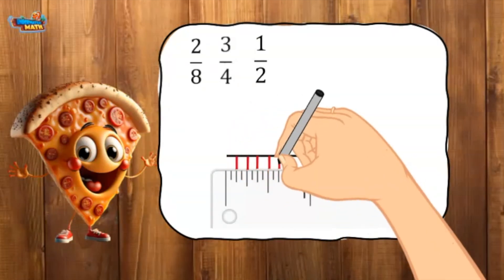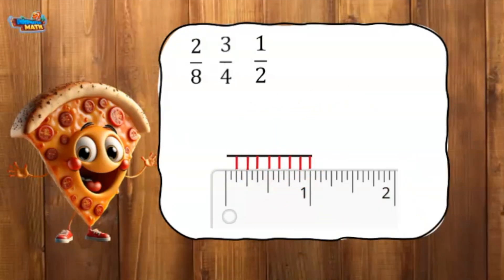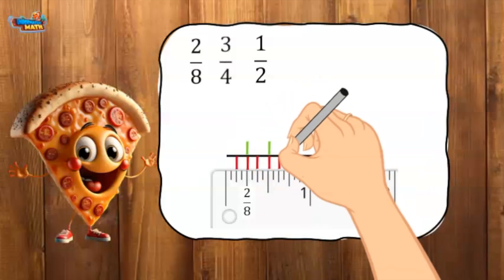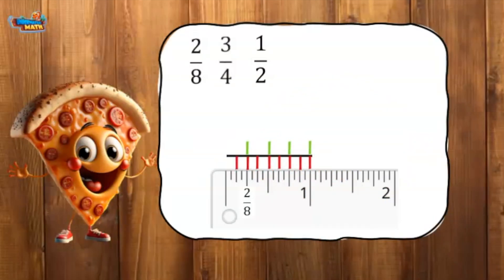The numerator is two. I find the second eighth marked and label it two eighths. On the top of the number line, I label each fourth of an inch because the denominator of the second fraction is four.